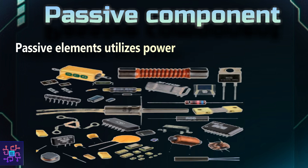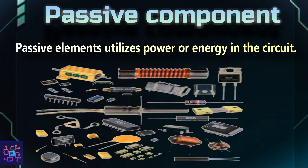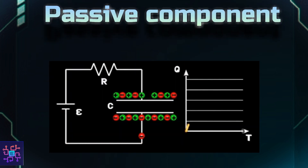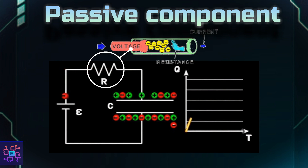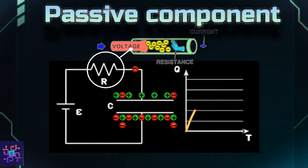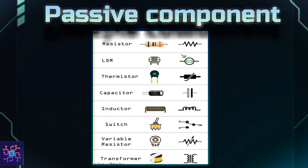To utilize the power or energy in the circuit, we use passive components. These are devices which store energy in the form of voltage or current. Passive components cannot control the flow of current, and they do not require any external source for their operation, so they are energy acceptors in the circuit. Examples of passive components are resistors, capacitors, and inductors.